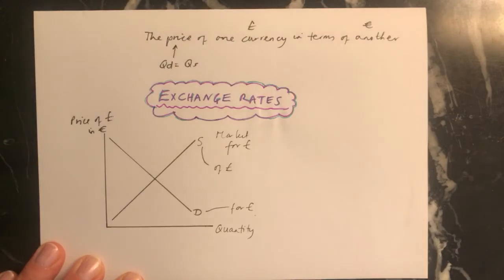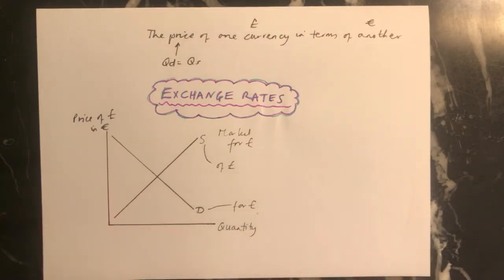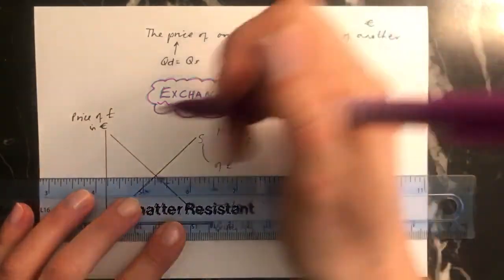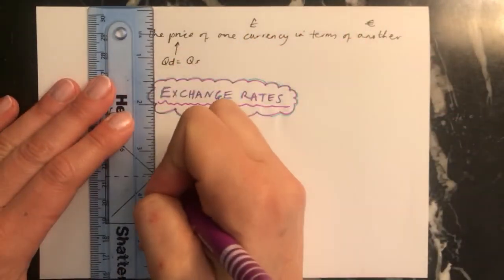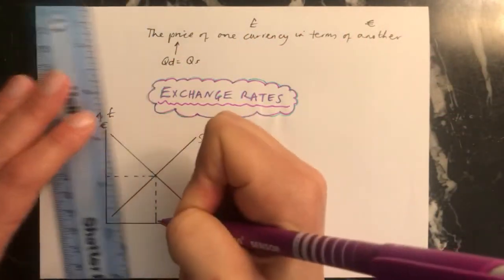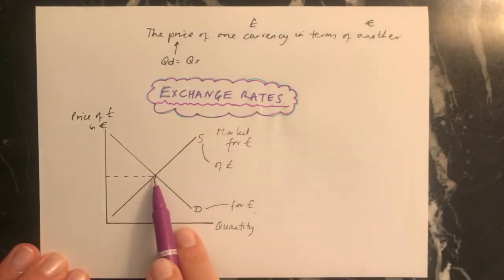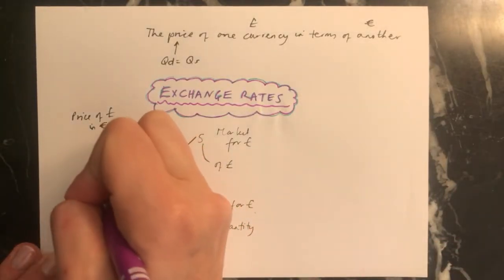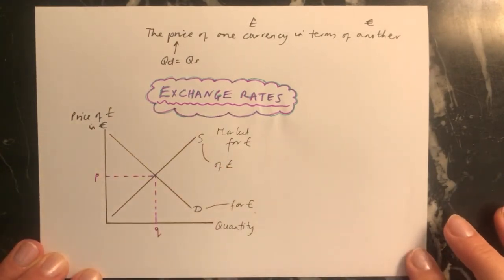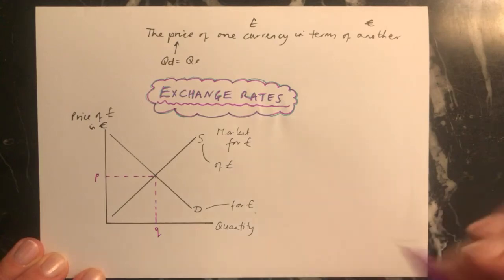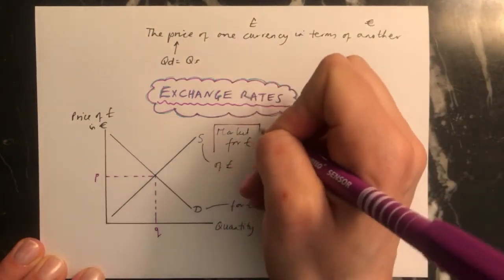And then you can see in the diagram where the price of the pound is. I've just got to change pens in relation to euros by looking at the equilibrium. So you find out where the price of the pound is by finding where the demand for pounds is equal to the supply for pounds, which is here at the equilibrium. So you know that the price of the pound is at P and the quantity is at Q. So remember, this diagram is looking at the market for pounds.